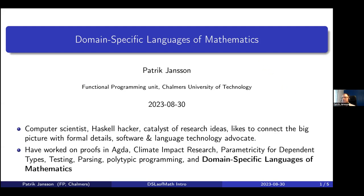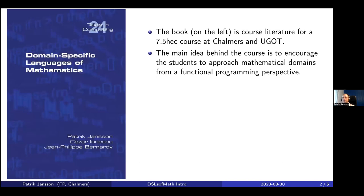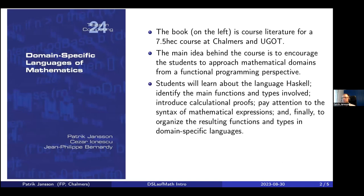There is a book — I'm the main author with two co-authors. It's also the course literature for a seven-and-a-half credit course at Chalmers and the University of Gothenburg. The main idea is to encourage students to approach mathematical domains from a functional programming perspective. Students learn Haskell, identify main functions and types involved in different mathematical concepts, and introduce calculational proofs, paying attention to syntax and semantics.